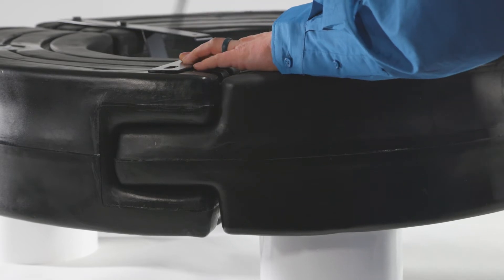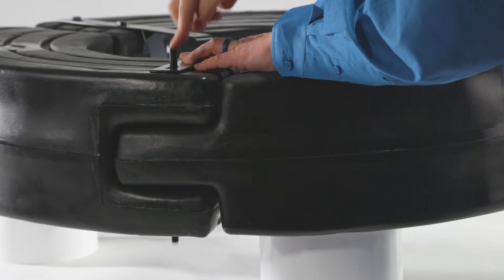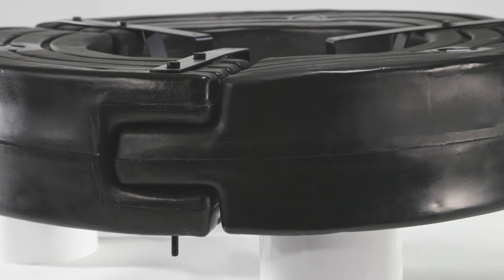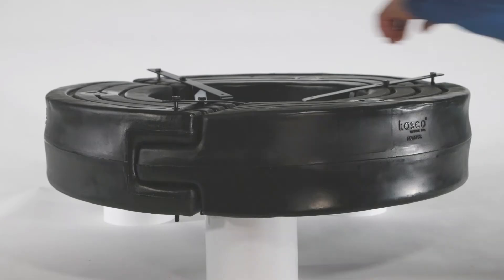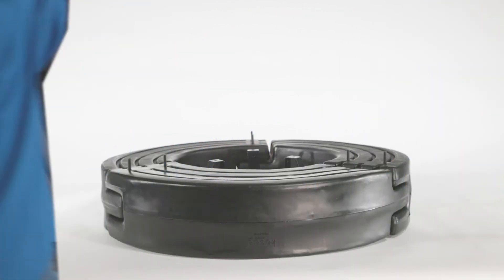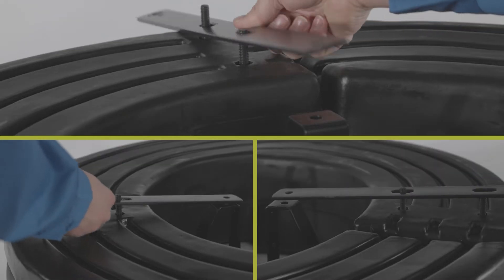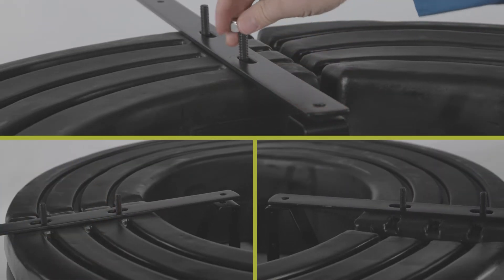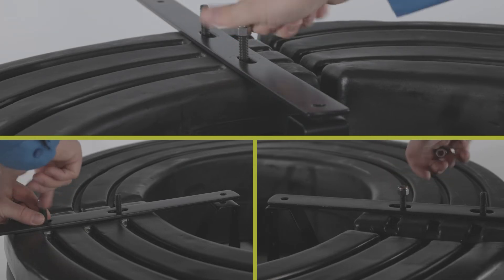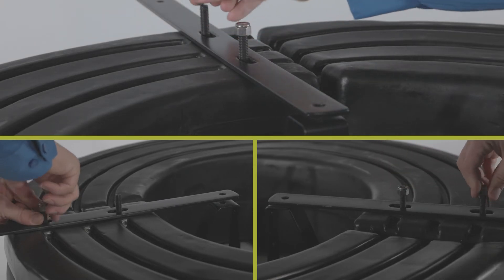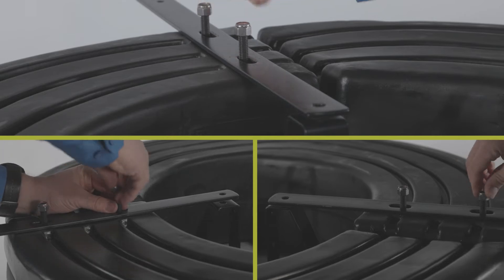This may require some minor repositioning of the float sections as you push the bolts all the way through. Don't force the bolts through though. Carefully turn the assembled bracket upside down. Place the bottom float brackets over the bolt ends, which should now be extended through the float sections. Loosely install the six 3/8 inch nuts.